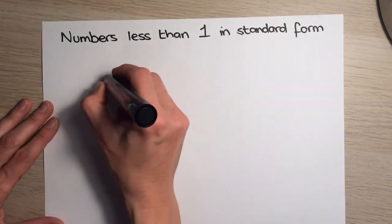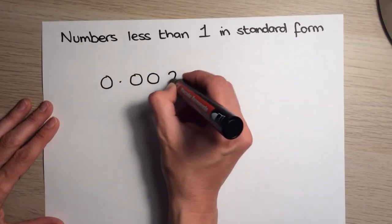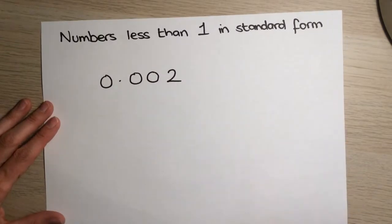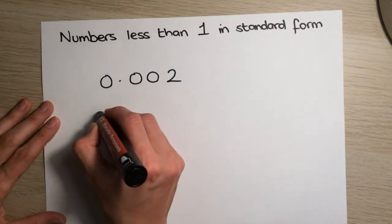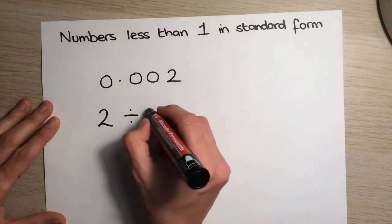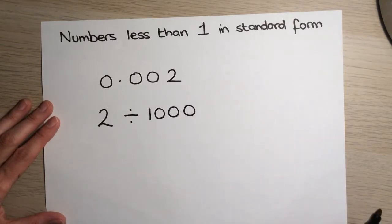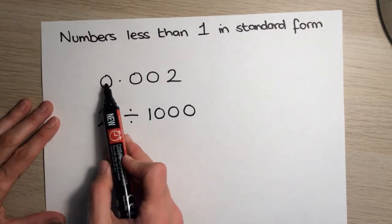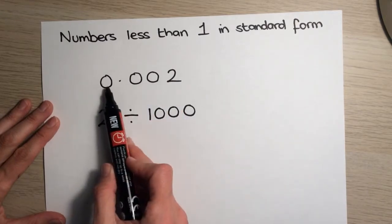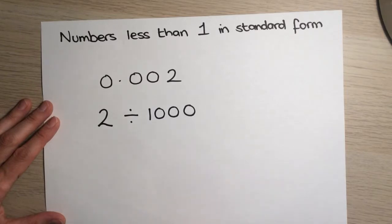So, if we take the number 0.002, then if we think about this, this number is the same as doing 2 divided by 1,000. Okay, because the 2 is moving from here to here, so it's moving 1, 2, 3, 1, 2, 3, 0.